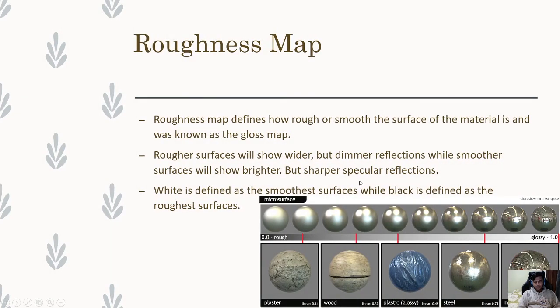So after that we have the roughness map. The roughness map defines how rough or smooth the surface of the material is and was known as the gloss map. Rougher surfaces will show wider but dimmer reflections, while smoother surfaces will show brighter but sharper specular reflections. White is defined as the smoothest surfaces whilst black is defined as the rougher surfaces.